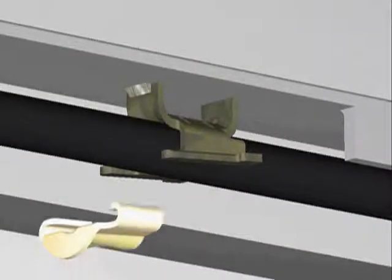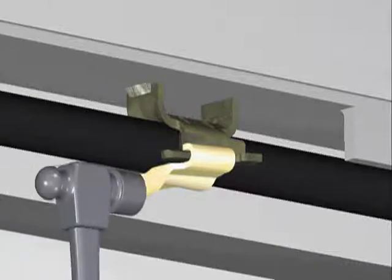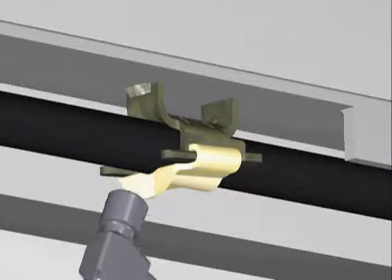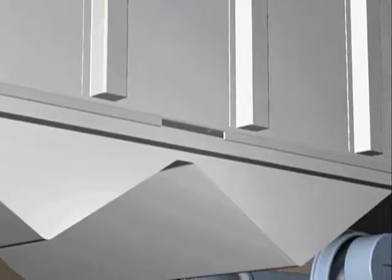Note that on all styles of pipe anchor bases, it is only necessary to bend one of the tabs to retain the wedge in position. This allows the pipe to be removed and reinstalled several times while reusing the same base and wedge.